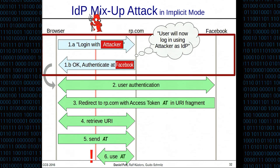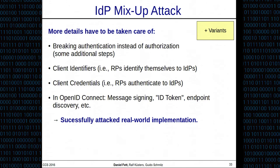This attack seems simple when described this way, but in practice you have to handle many more details. For example, if you want to break authentication instead of authorization, you need additional steps of the protocol. You also have to account for client identifiers and client credentials. And if you want to attack OpenID Connect rather than OAuth, you have to handle even more things such as message signing, the ID token, and dynamic endpoint discovery. We were able to show that this attack, discovered in our formal model, can successfully be applied to real-world implementations.